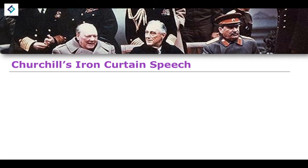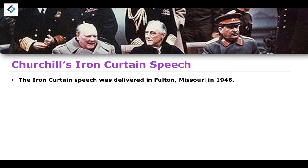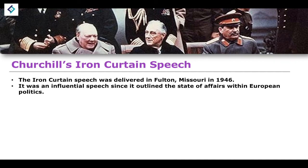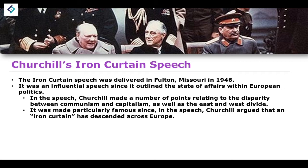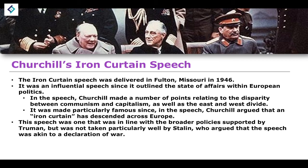Beginning with Winston Churchill's Iron Curtain speech — one of the most famous speeches, arguably the most famous speech during the Cold War — it was delivered in 1946 to a number of individuals in Fulton, Missouri. It was an influential speech since it essentially outlined a state of affairs within European politics and quite aptly explained how foreign policy was going to behave over the next 40 or 50 plus years as the Cold War started to really ramp up. Churchill made a number of points relating to the disparity between communism and capitalism, as well as this establishment of an East-West divide. It was particularly famous — the reason why it's called the Iron Curtain speech — because Churchill argued that an Iron Curtain has descended across Europe between the communist USSR and the capitalist states in the West.